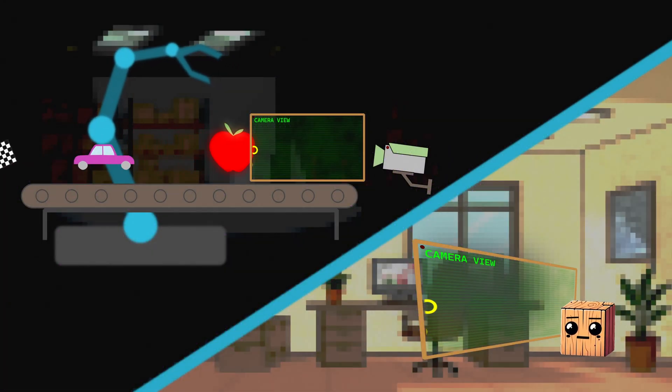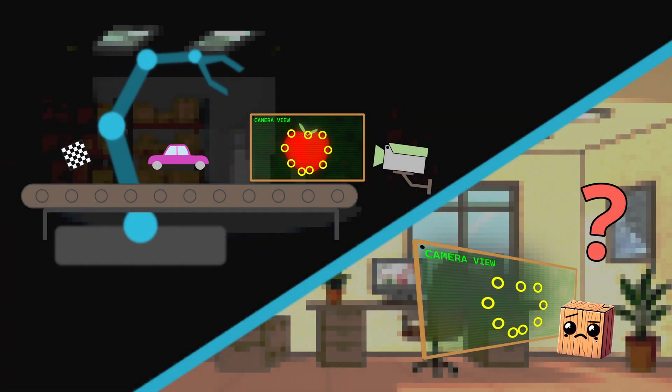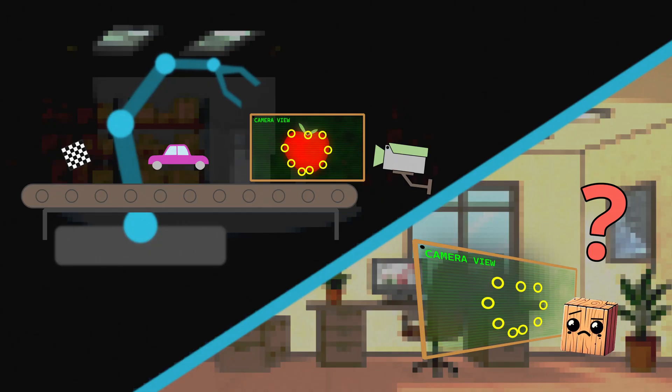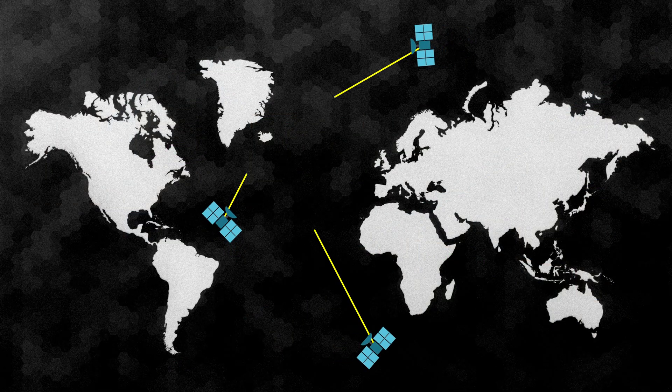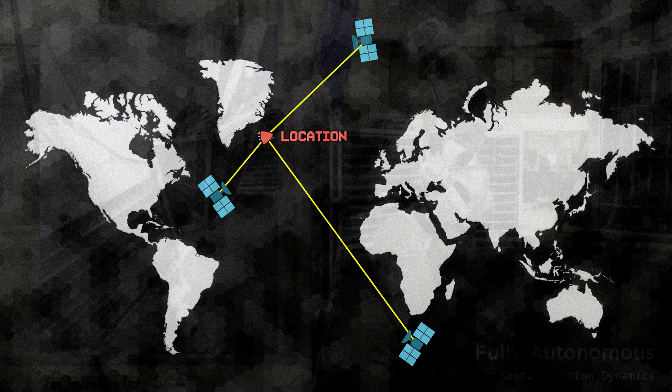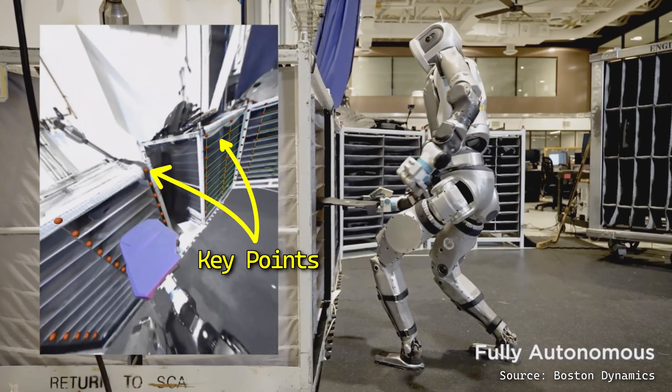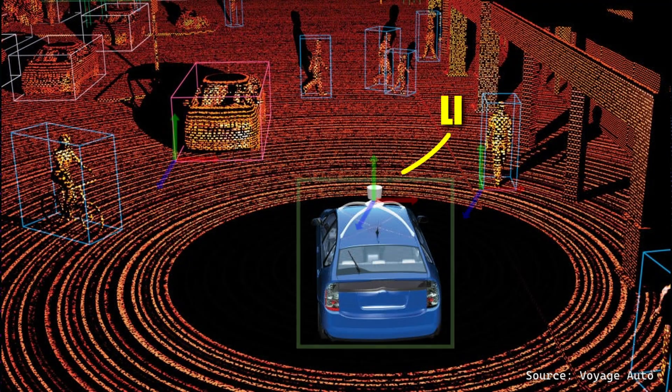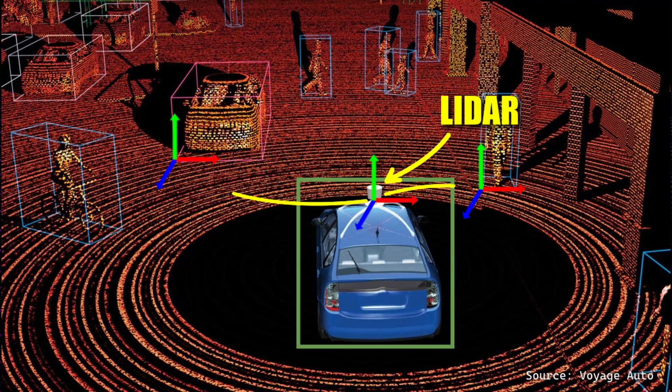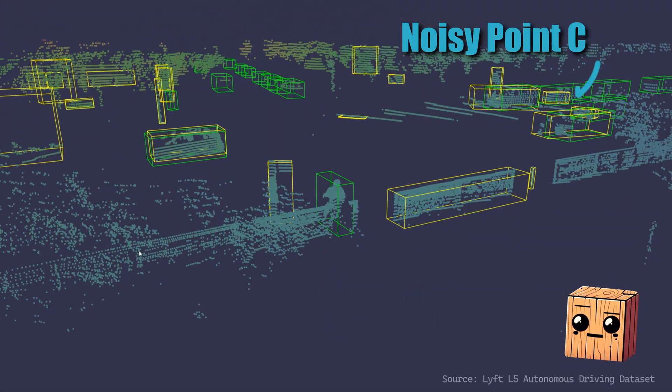Any system that interacts with the world needs to know one thing first. Where are things? That's pose estimation, the backbone of robotics, navigation, and more. Computer vision solves this with algorithms. They take key points from images or LiDAR and try to fit models to it. But real life makes that hard. Bad lighting, sensor noise, things blocking the view.